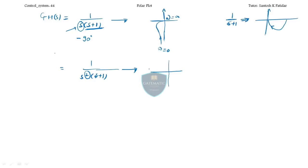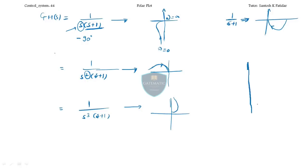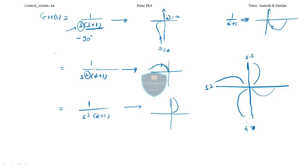When you add two poles at origin, the graph shifts by 180 degrees — it will look like this. If you have three poles at origin, the graph shifts further accordingly. So summarizing: s=0 means zero poles at origin (original graph), s=1 means one pole, s=2 means two poles, s=3 means three poles at origin.